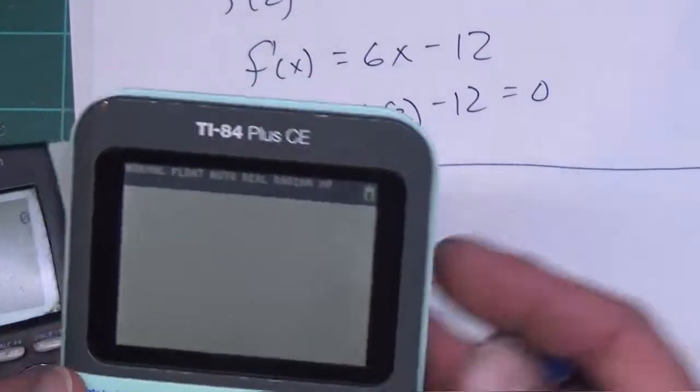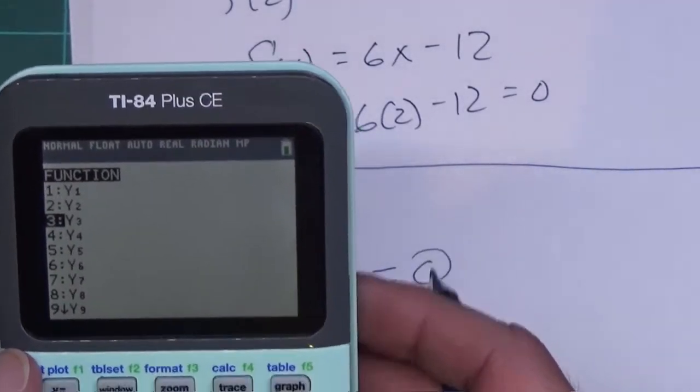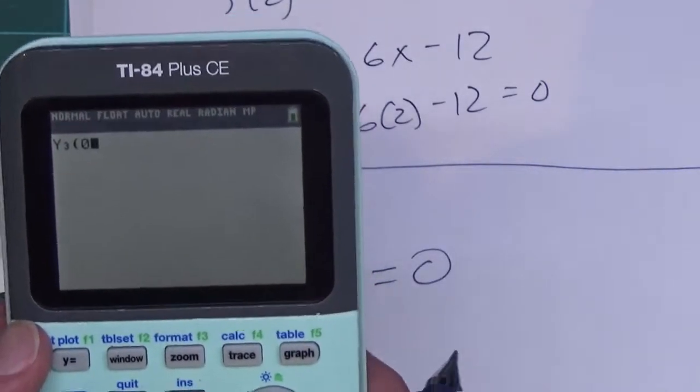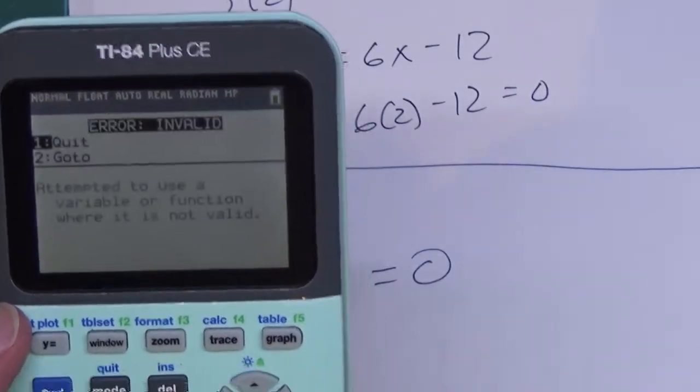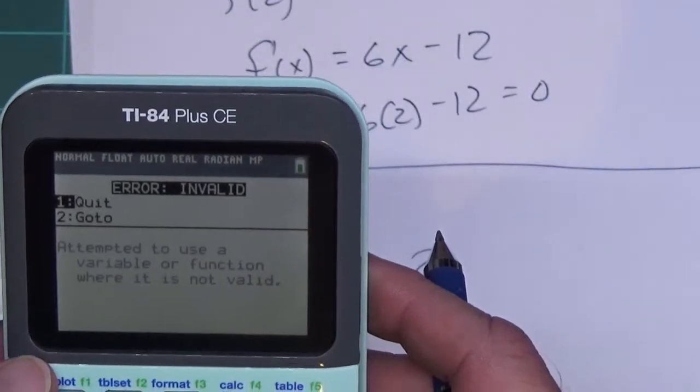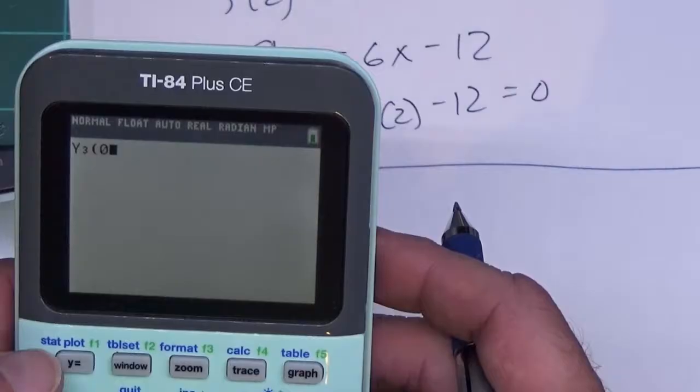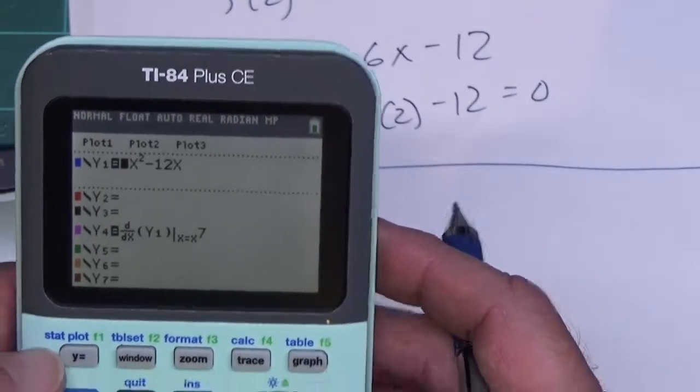Let me do it with this one because it's going to be the same thing. Vars over to y vars, press enter, we go down to y3, parentheses 0, close parentheses, press enter. Uh-oh, attempted to use a variable or function where it is not valid. So I probably mistyped something in here.